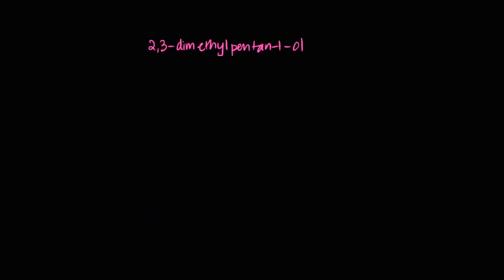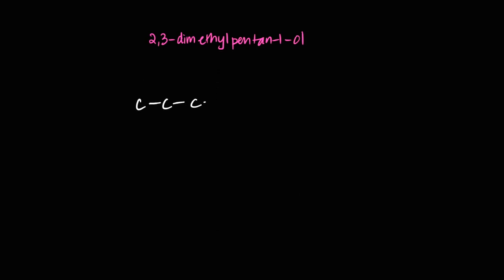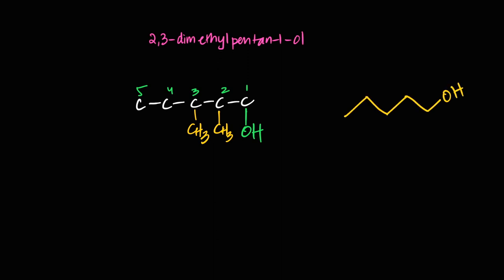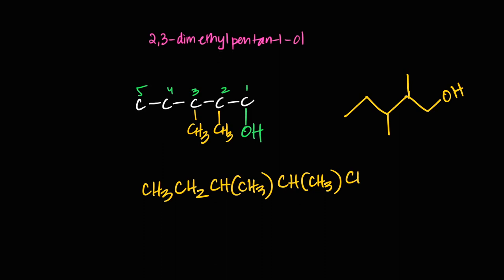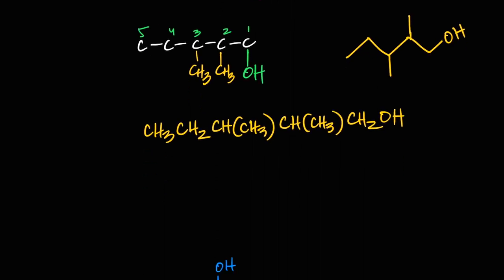How would I draw 2,3-dimethylpentan-1-ol? I draw a five-carbon chain, all single bonds. The first carbon has the OH group — so that's carbon one on the right. Labelling: one, two, three, four, five. Methyl groups go on carbons two and three. The structural formula is: CH₃-CH₂-CH(CH₃)-CH(CH₃)-CH₂OH.